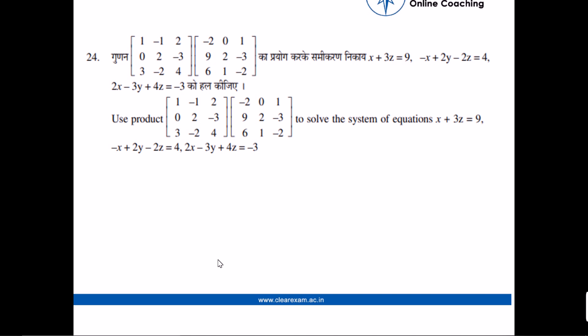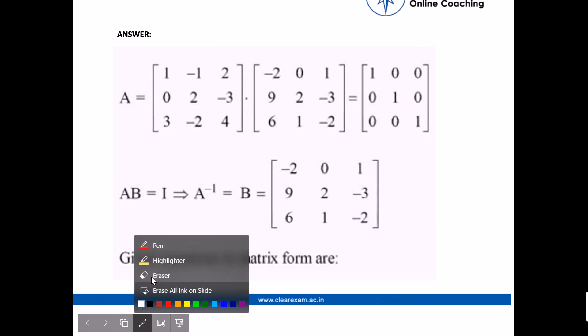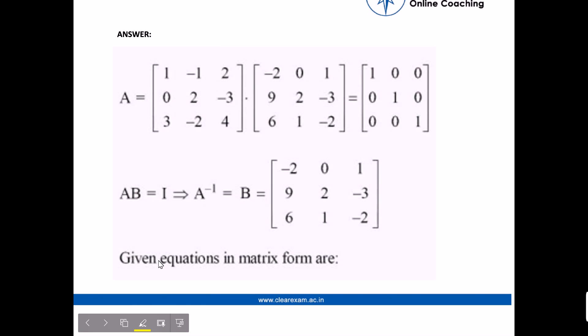So let's jump into the answer. Let's assume matrix A that is the product of the matrices. So multiplying these two matrices we will get [1, 0, 0; 0, 1, 0; 0, 0, 1]. That is equals to an identity matrix.